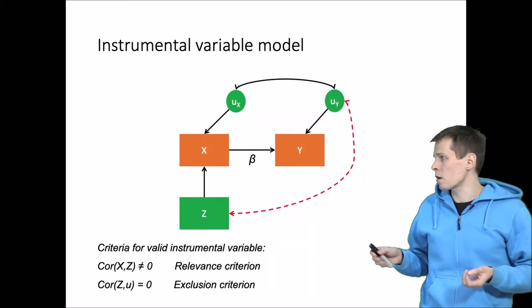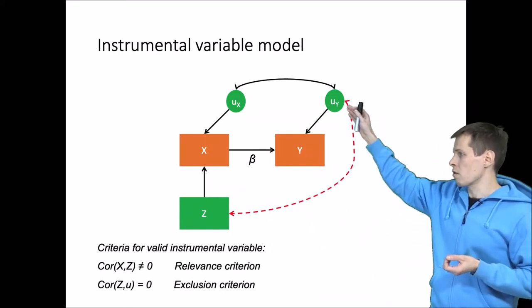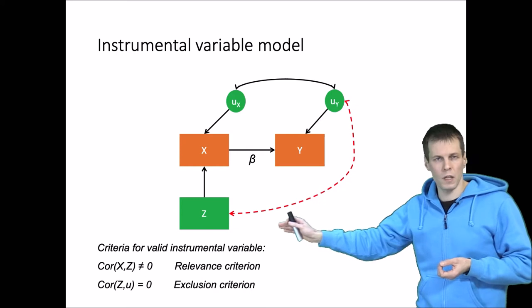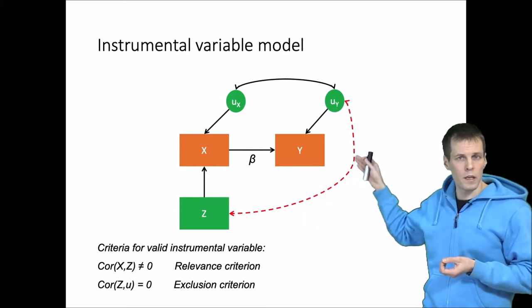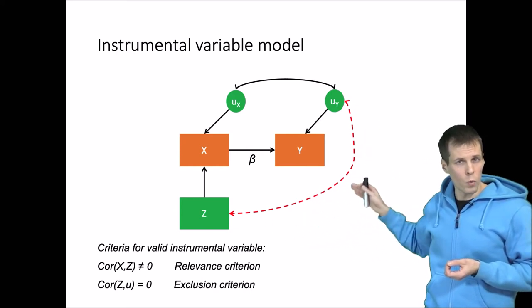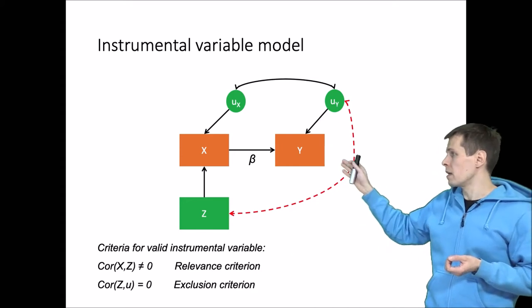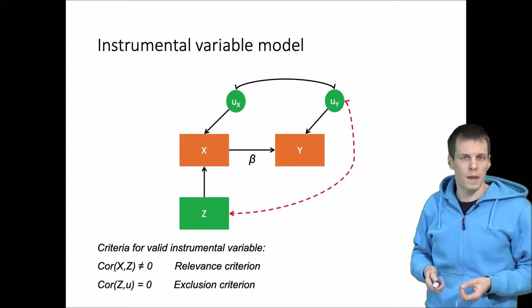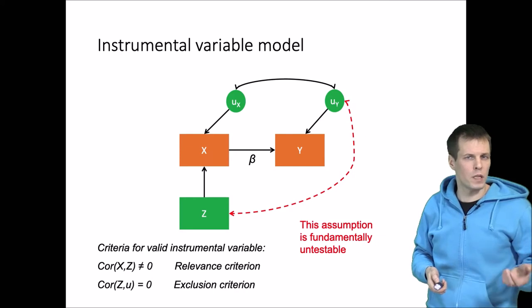So the exclusion criteria was about this correlation. We must assume that Z, the instrumental variable, is uncorrelated with UY, which is the error term of Y, the main dependent variable in our analysis. And that must be assumed to be zero.